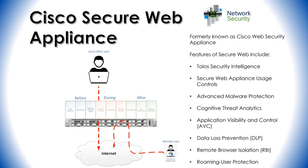Cisco Secure Web Appliance, which was formerly known as Web Security Appliance, protects users from visiting bad websites and protects them from accessing malicious content over the web. The Cisco Secure Web Appliance can be integrated with Cisco Umbrella for cloud-delivered gateway protection and with Cisco SecureX for unified visibility and faster incident response.